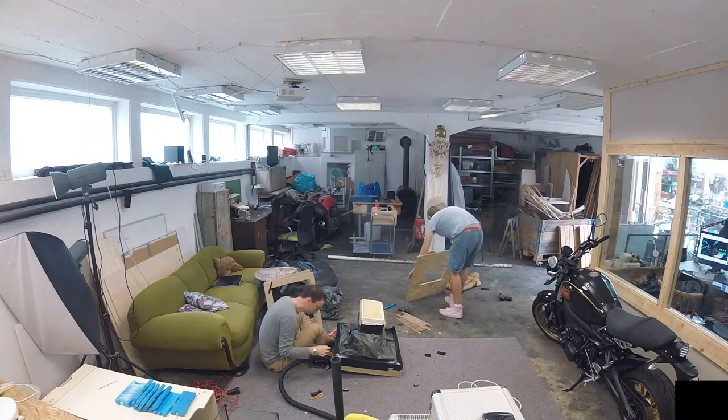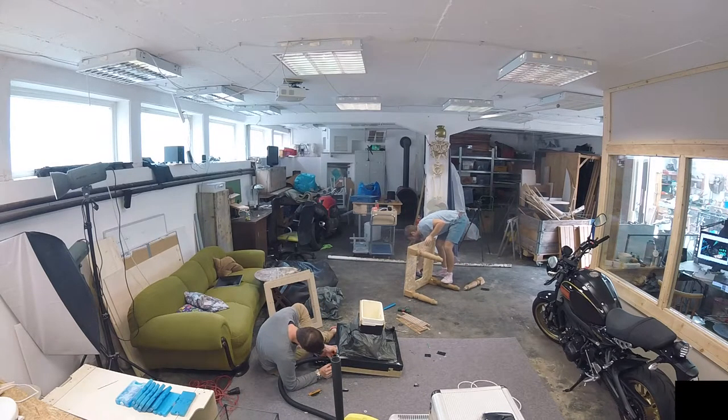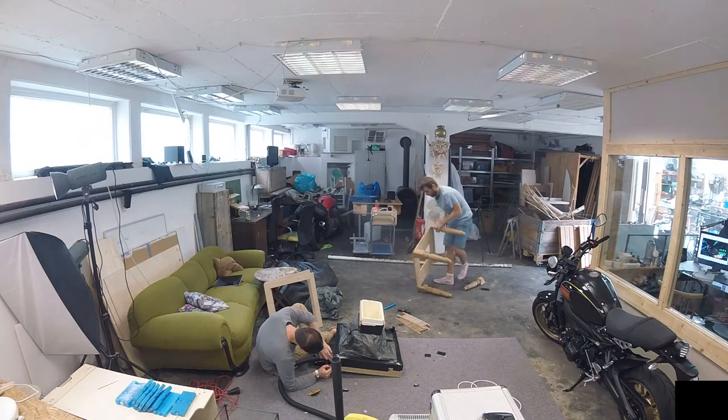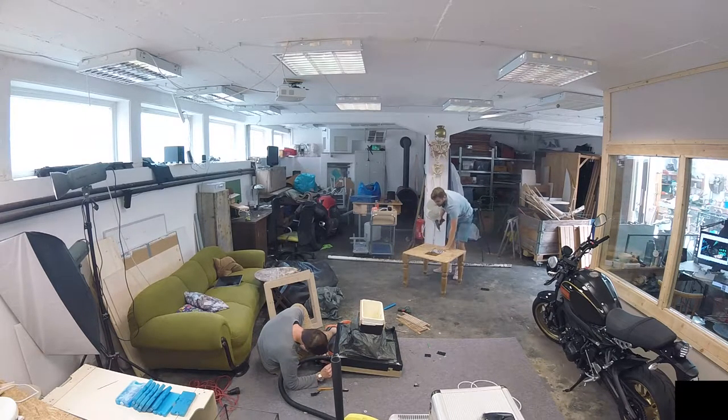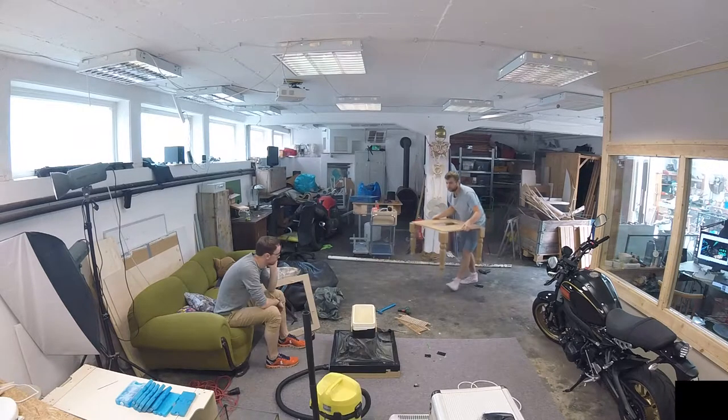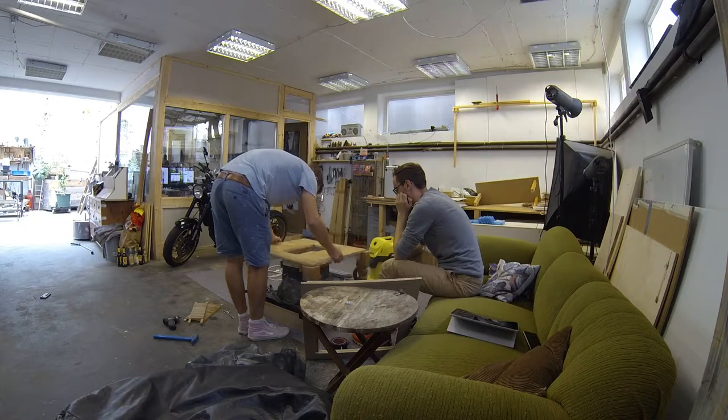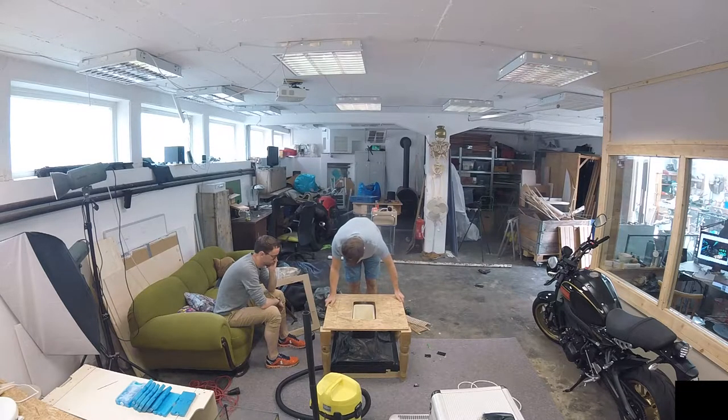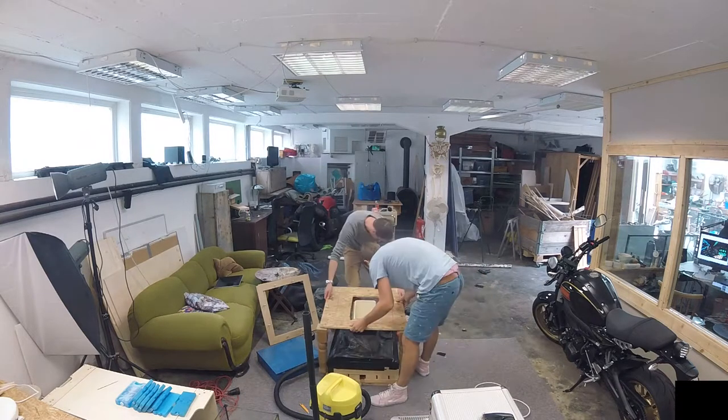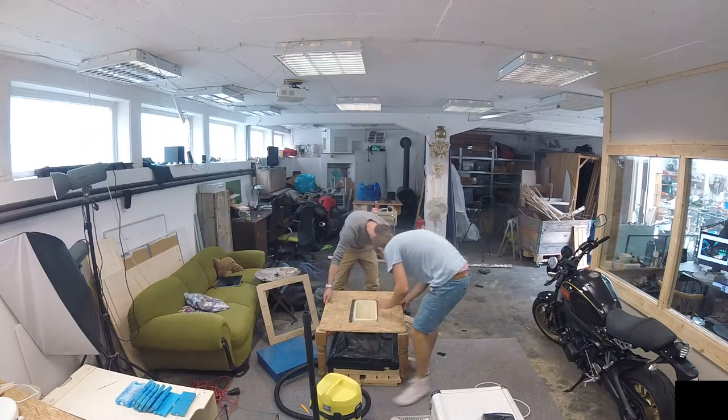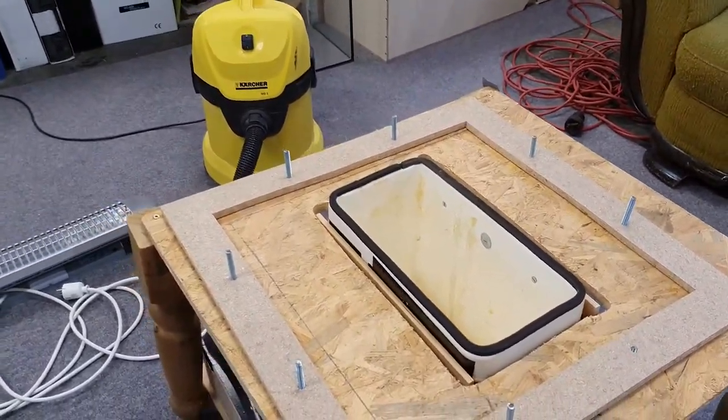As legs we used some spare legs we had saved from the trash and screwed them to the table surface. The table looks quite funny with its proper legs, but unfortunately they were a bit too long which is why the base with the attached inlay needed to be raised. The inlay needs to stick through the hole of the table in order for the plastic to create an airtight seal, and also because the top of the side walls are part of the final shape.